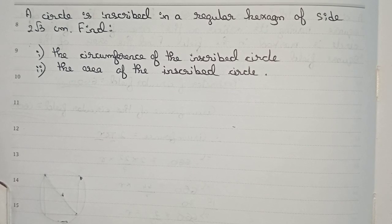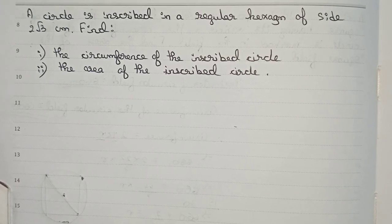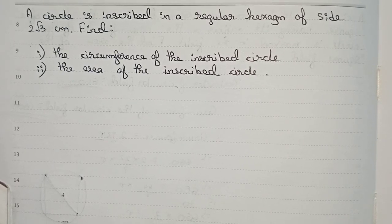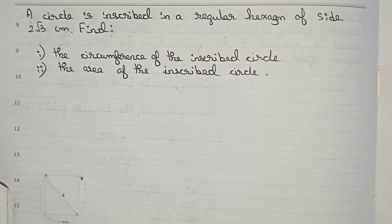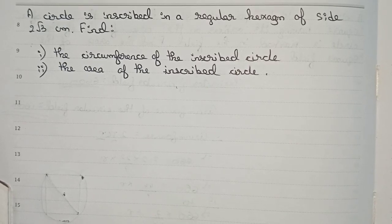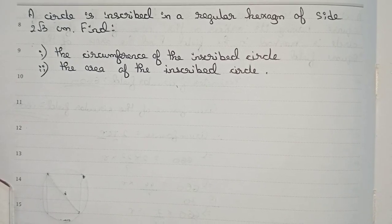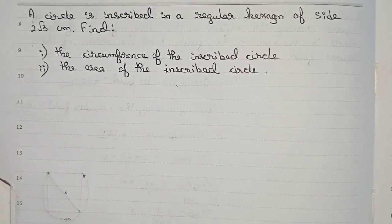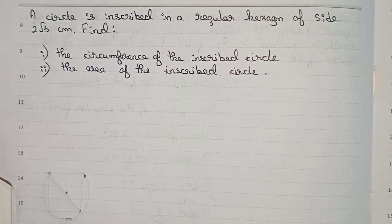Hello guys, welcome to this video. In this video, the question is: a circle is inscribed in a regular hexagon of side 2 root 3 centimeters. Find the circumference of the inscribed circle and the area of the inscribed circle.